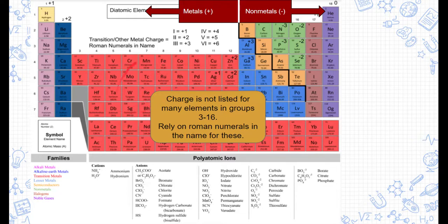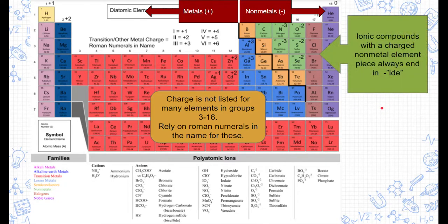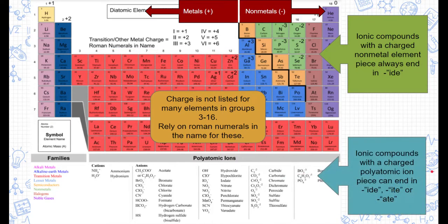In the middle, some elements — the transition and other metals — don't have charges listed near them. These elements typically use Roman numerals in their name to designate their charges. All other elements with standard charges don't need Roman numerals. However, five transition/other metals also don't need Roman numerals: silver, cadmium, zinc, gallium, and aluminum — their charges are listed as standard. In an ionic compound with just a metal and a nonmetal, names typically end in -ide. Polyatomic ions can be recognized when there are three or more elements attached, or when names end in -ate or -ite. A list of polyatomic ions is on the periodic table with their charges.